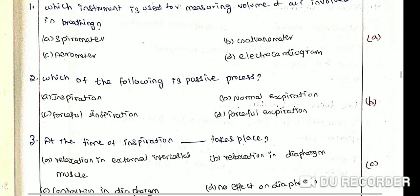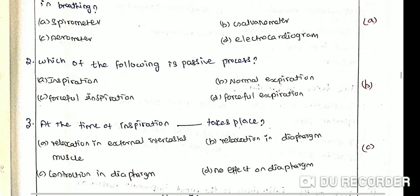Which of the following is a passive process? Option A: Inspiration. Option B: Normal Expiration. Option C: Forceful Inspiration. Option D: Forceful Expiration. The correct answer is Normal Expiration. Normal expiration is a passive process as during expiration contraction in any muscles does not take place.